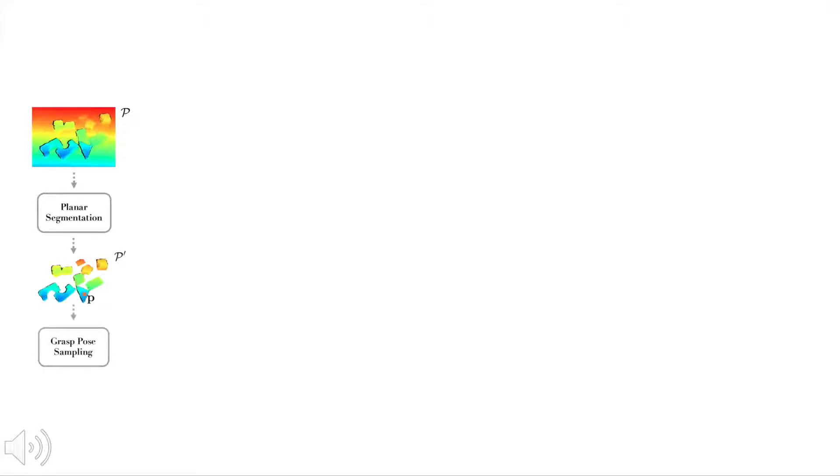Our grasp sampling algorithm uniformly samples n grasp poses over P'. We voxelize the point cloud and transform the voxel grid V according to each grasp pose so this information is embedded.